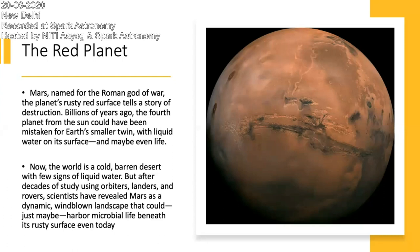It is often said that there was water on Mars, but we don't have any proof now. Now the world is a cold, barren desert with few signs of liquid water. But after decades of study using orbiters, landers and rovers, scientists have revealed Mars as a dynamic, wind-blown landscape that could just maybe harbor microbial life beneath its rusty surface even today. This means there can be a sustainability of life on Mars.